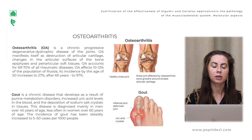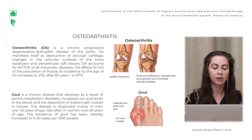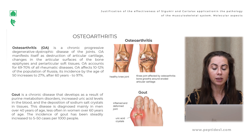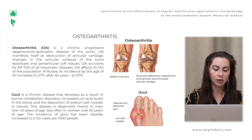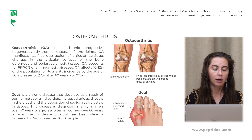Osteoarthritis is a chronic progressive degenerative dystrophic disease of the joints. This disease manifests itself as destruction of articular cartilage, changes in the articular surface of the bone epiphysis, and periarticular soft tissues. Osteoarthritis accounts for 70% of all rheumatic disease.